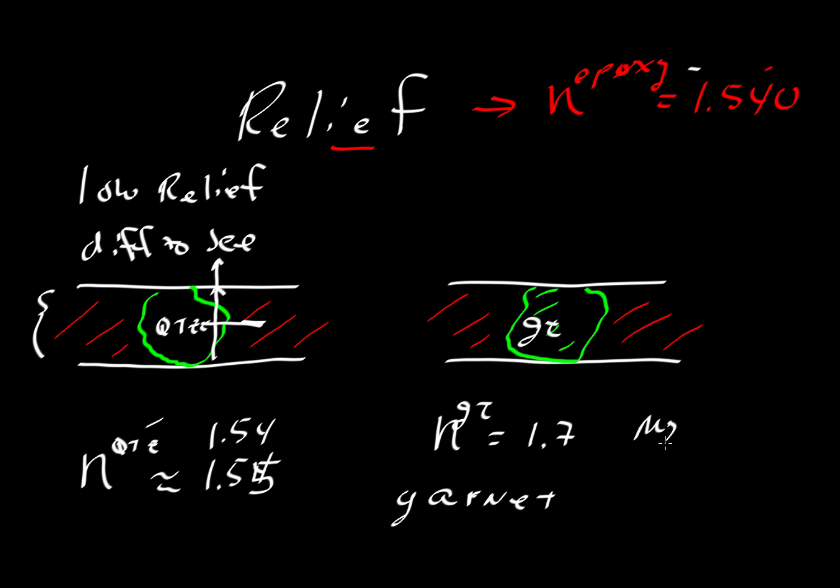For garnet, we can put in magnesium or iron or calcium into the larger sites, chrome, aluminum, or iron in the three plus state in some of the smaller sites. So depending on that chemistry, we might get a little bit of variation in the index of refraction.